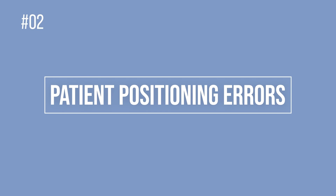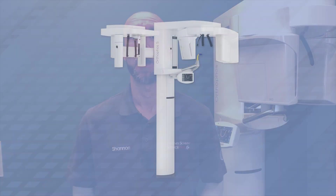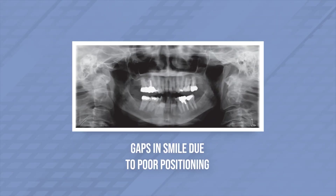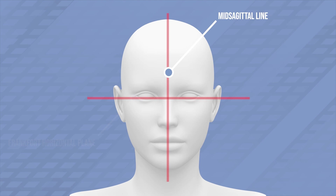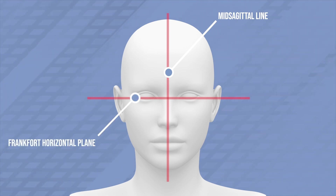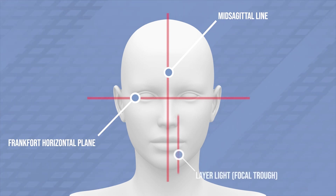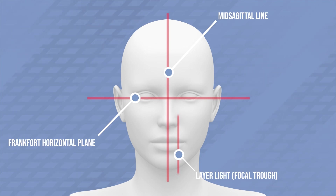The second component would be patient positioning errors. They are quite common and very easily avoidable. First, make sure of proper patient positioning on the bite block — many images show the patient biting beyond the bite stick, not in the correct orientation, or not making proper contact, leaving a gap in the smile on the image. Another component is layer light positioning: the mid-sagittal line goes directly down the patient's face and should line up between the eyes. The second layer light is your Frankfort horizontal plane, lined up between the tragus of the ear across the orbital bone, kept parallel to the floor. The third layer light is your canine light or PA light, kept right on the middle of the canine or PA for a great focal trough.